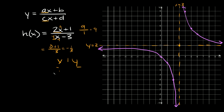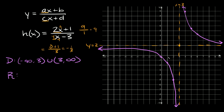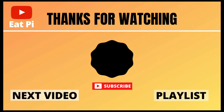The last thing is to find the domain and range. The domain goes from negative infinity, skipping over x equals 3, so it's negative infinity to 3, union 3 to infinity. The range skips over positive 2, so it goes from negative infinity to 2, union 2 to infinity. If you found the video helpful, definitely leave a thumbs up below, and if you have any questions or want to see other examples, just let me know in the comment section.